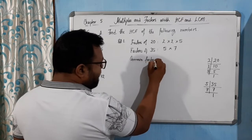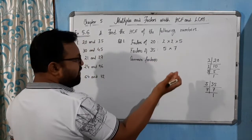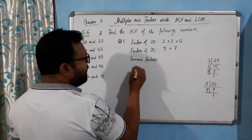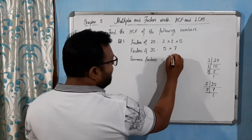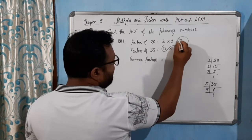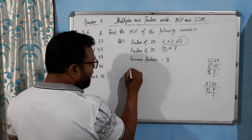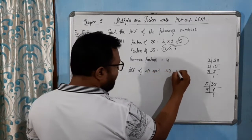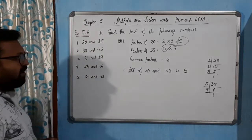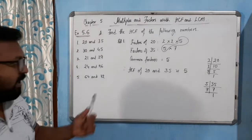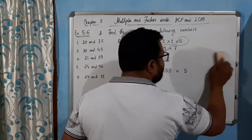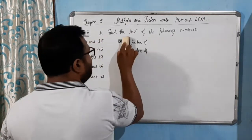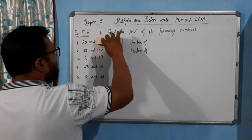Now we write the common factors. If you get a single common factor we use 'factor', if more than one we use 'factors'. Looking at the factors of 20 (2 × 2 × 5) and 35 (5 × 7), the only common factor is 5. Therefore, the HCF of 20 and 35 is 5. I hope you understood. The more examples you do, the more fluent you will become.